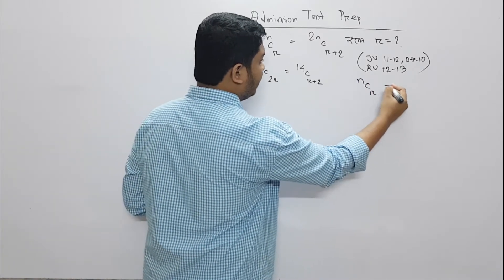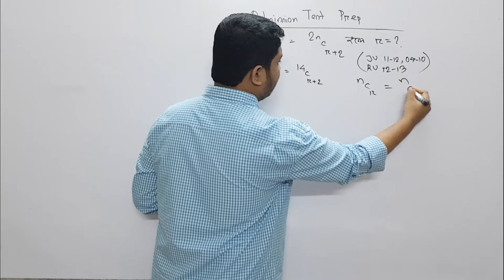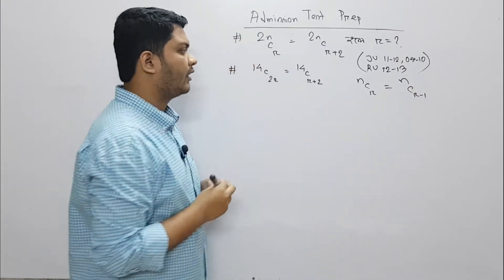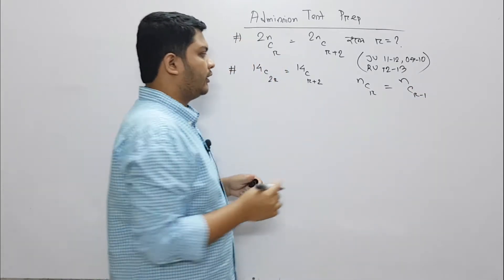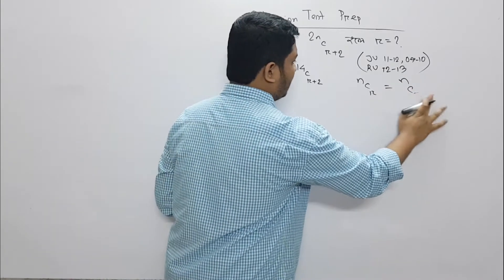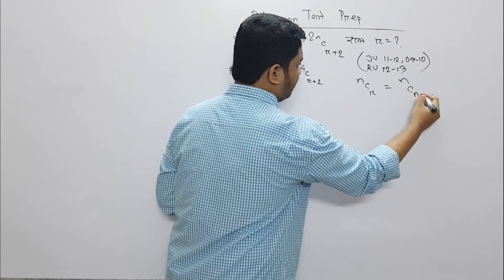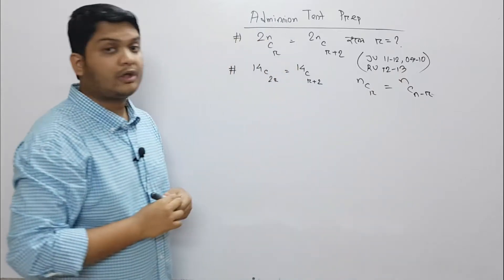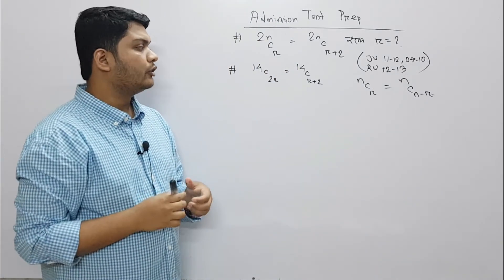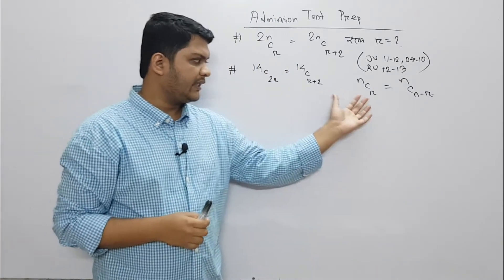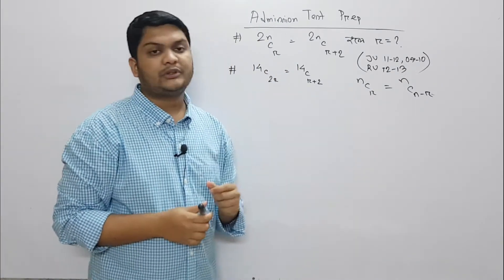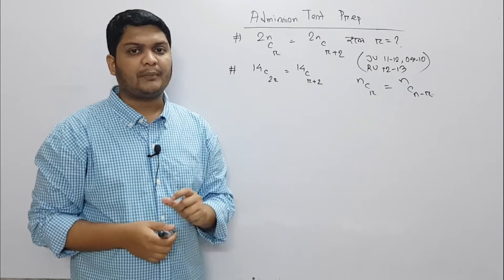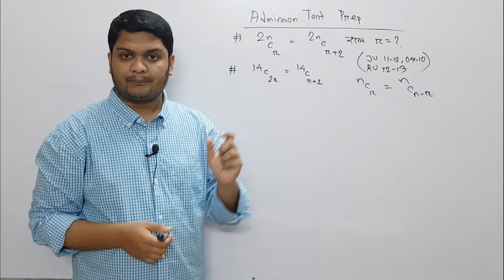I have done this solution. It is nCr is equal to nC(n minus r). So here we have an example: 5C2 is equal to 5C3.